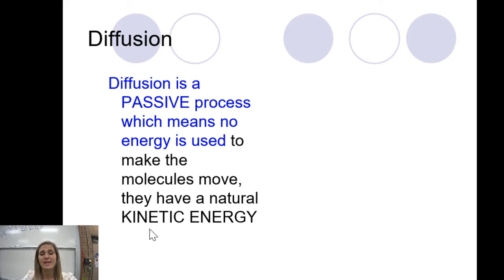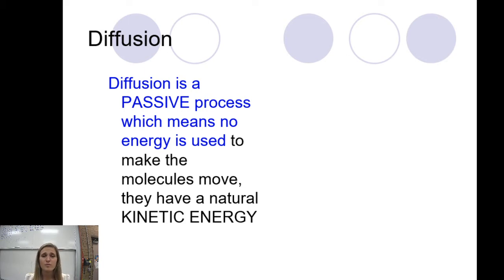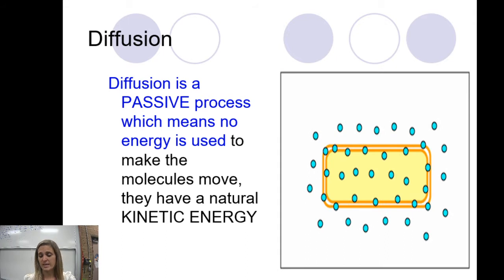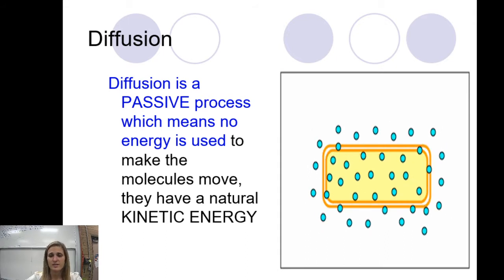Molecules have natural kinetic energy — that movement energy you may remember from junior high science. Molecules naturally move and bounce against each other. The reason they diffuse is that they're so close together, they have that natural kinetic energy; they vibrate and move, and once they start knocking together, the energy causes them to move further and further apart.